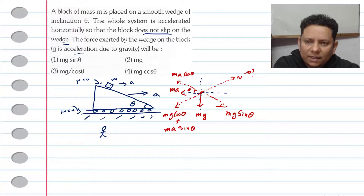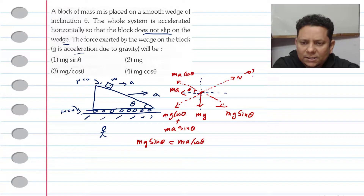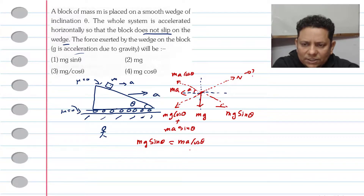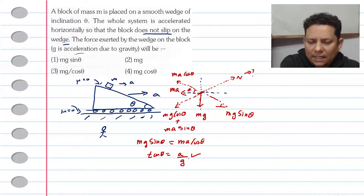Since we don't want the block to move with respect to the wedge, for the non-slipping condition, Mg sin theta must equal MA cos theta. Cancelling M from both sides and dividing, we get tan theta equals A divided by G.